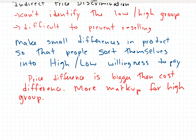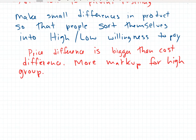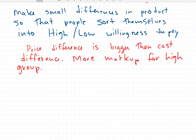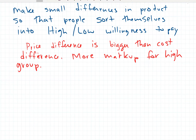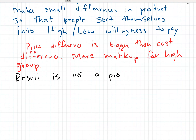We don't need to prevent resale here because everyone has a choice to buy either product in the first place — if they prefer the cheaper one, they can go buy it. Resale is not a problem because all the goods are freely available to everyone; they're not restricted by time, age, or status.